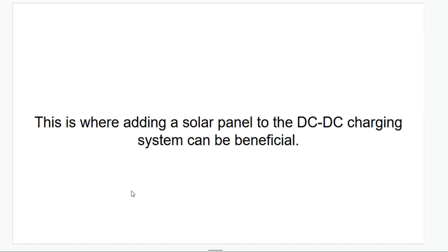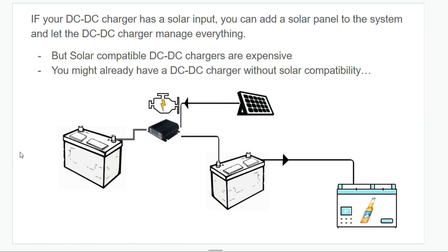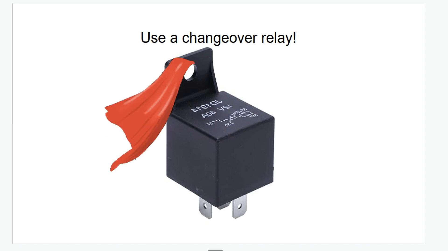This is where adding a solar panel to the DC to DC charging system can be beneficial. If your DC to DC charger has a solar input, you can add a solar panel to the system and let the DC to DC charger manage everything. But the two problems with this is solar compatible DC to DC chargers are expensive and you might already have a DC to DC charger system in place without solar compatibility. And that's where the changeover relay comes in.